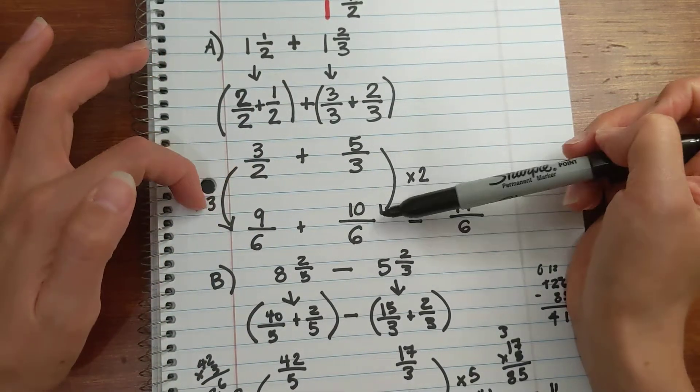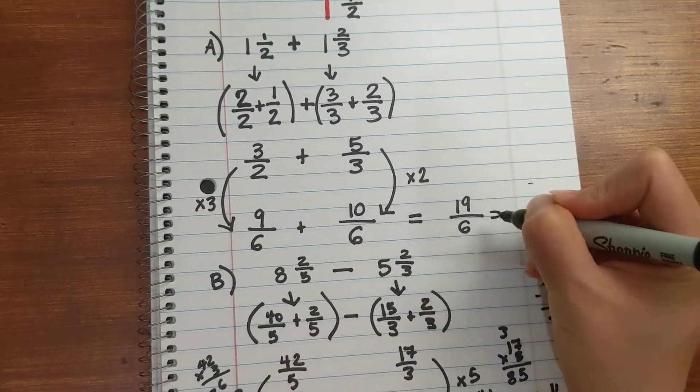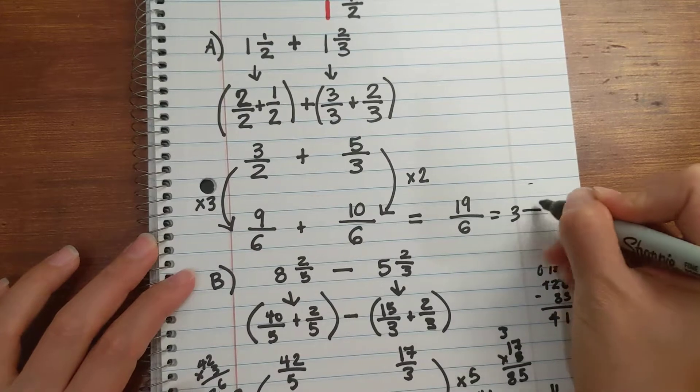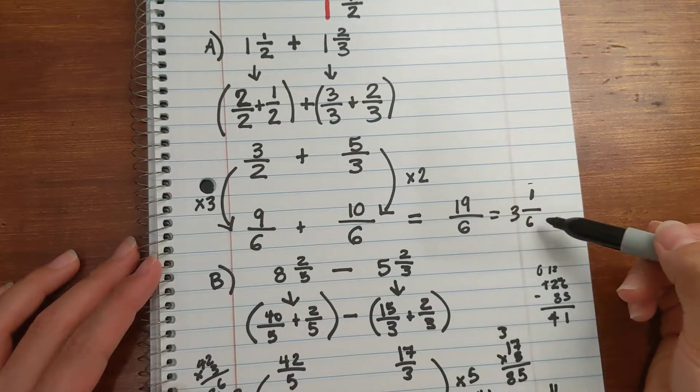Rewrite it, add, so you have your improper fractions. Find the least common denominator, add, and then find your - oh, I didn't change this one to a mixed fraction. So 6 into 19 three times with a remainder of 1 over 6. Improper fraction or mixed fraction.